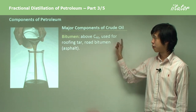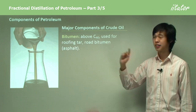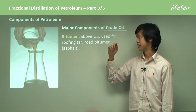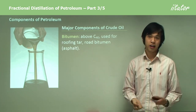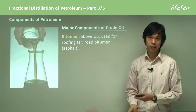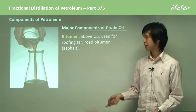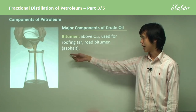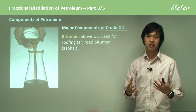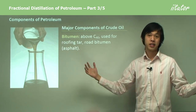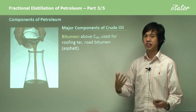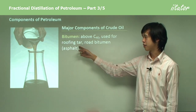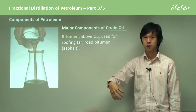And lastly, C40 and above — the very, very heaviest stuff — is bitumen, essentially. It's the stuff we put on our roads to make them smooth and stick together all that gravel, or asphalt. This C40-or-bigger fraction of petroleum is also used as roofing tar.